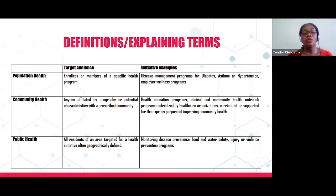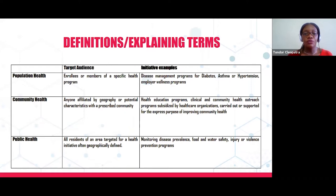This table shows the target audience for population health, community health, and public health, and the possible programs or initiatives. For population health, the target audience includes enrollees or members of specific health programs such as disease management programs for diabetes or asthma, or employee wellness programs. Community health looks at audiences affiliated by geography with health education or clinical outreach programs. Public health targets all residents of an area, with initiatives like disease monitoring, food and water safety, and injury or violence prevention programs.